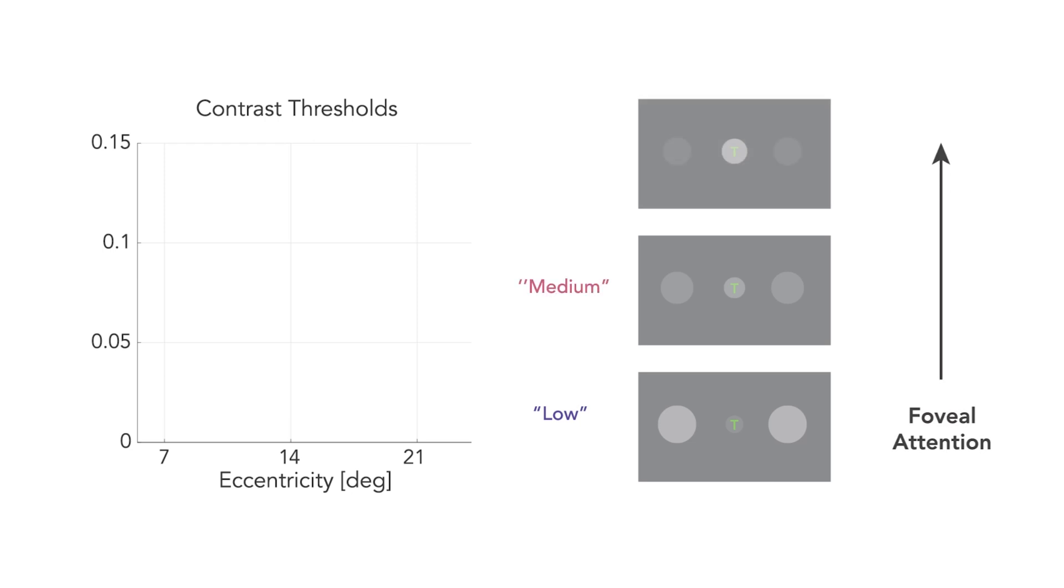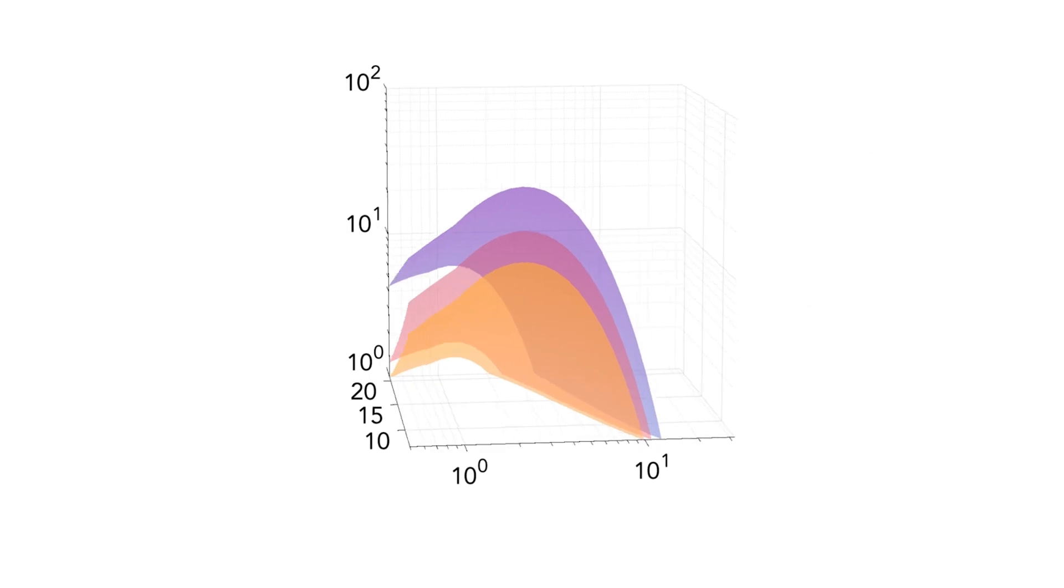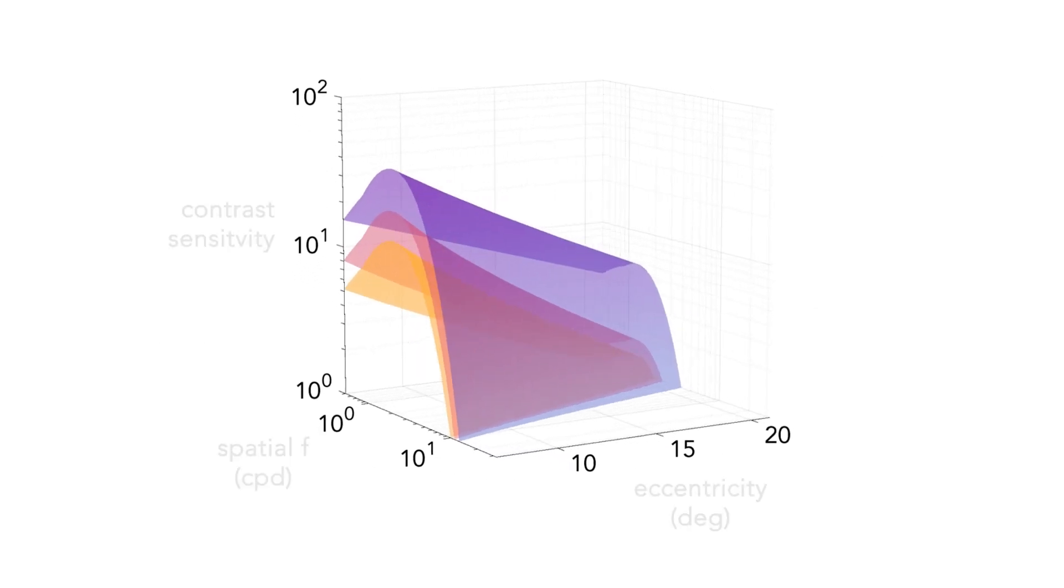We show that increasing attention in the fovea increases peripheral contrast discrimination thresholds significantly, particularly at higher eccentricities, and introduce the first eccentricity-dependent, attention-aware model of contrast sensitivity.